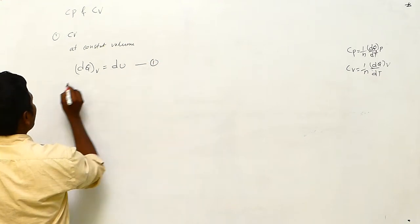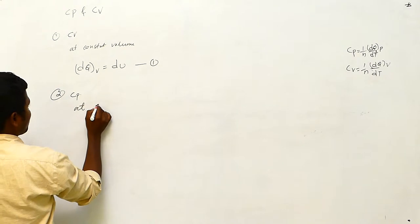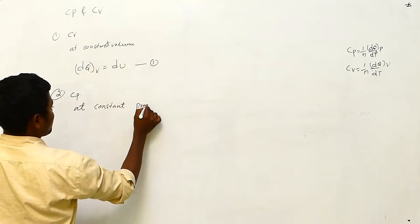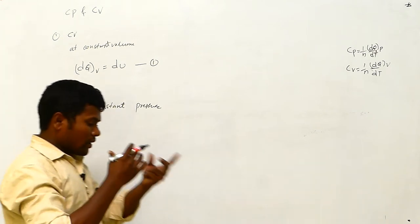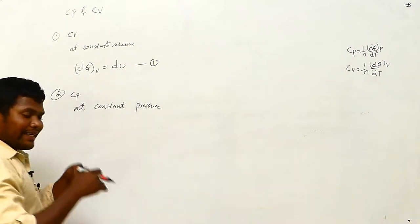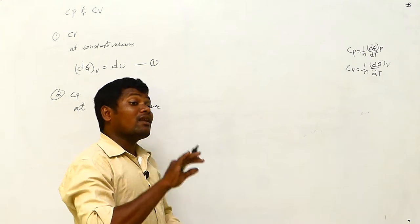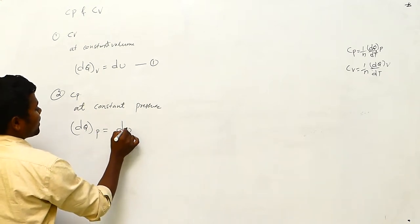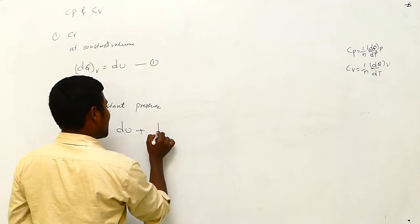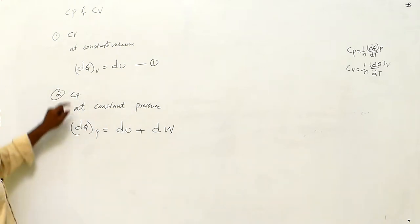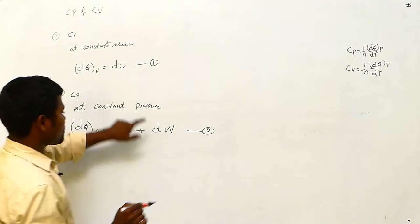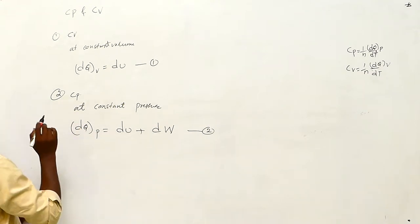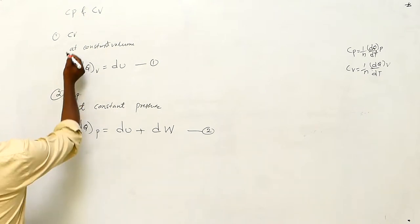Next, Cp. If I supply some heat energy to the system at constant pressure, some goes into internal energy and some is used as external work done by the system. So we can write: dQ equals dU plus dW. This is the second equation.